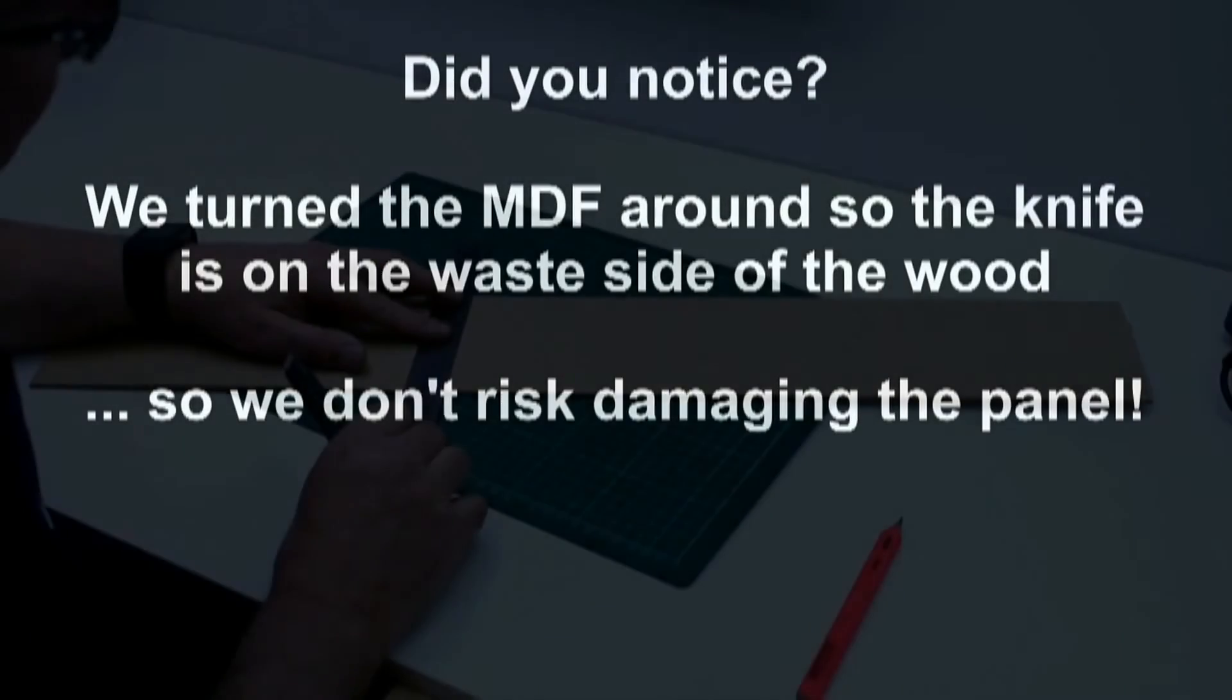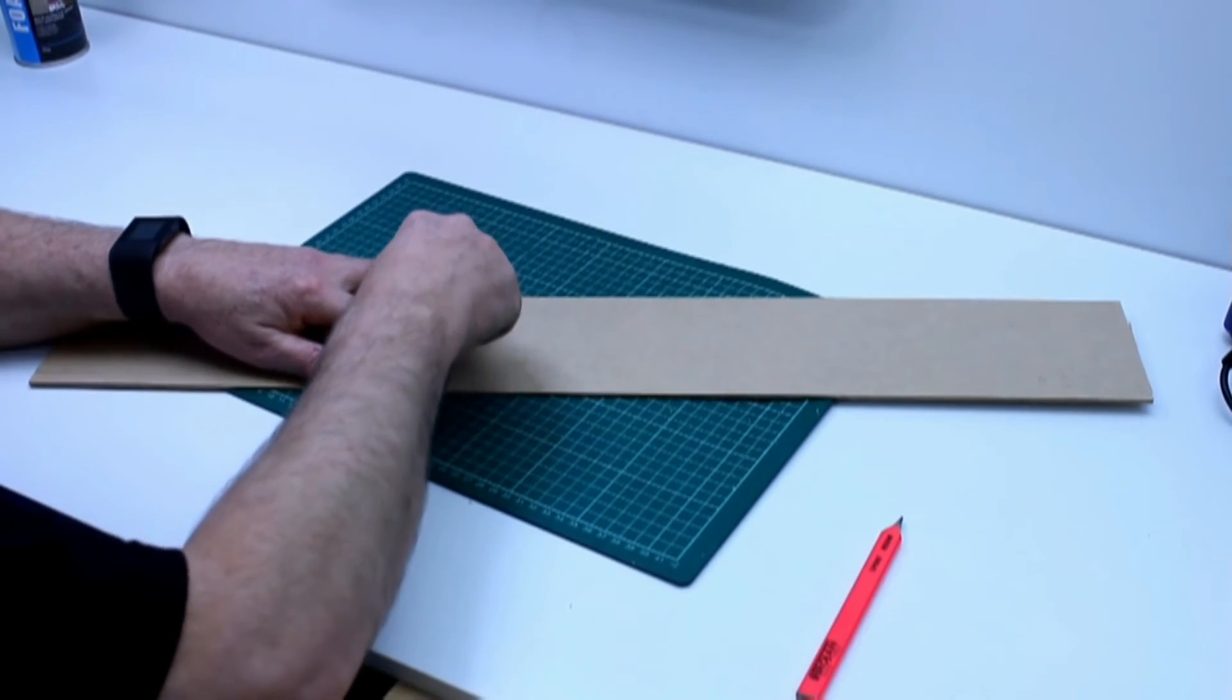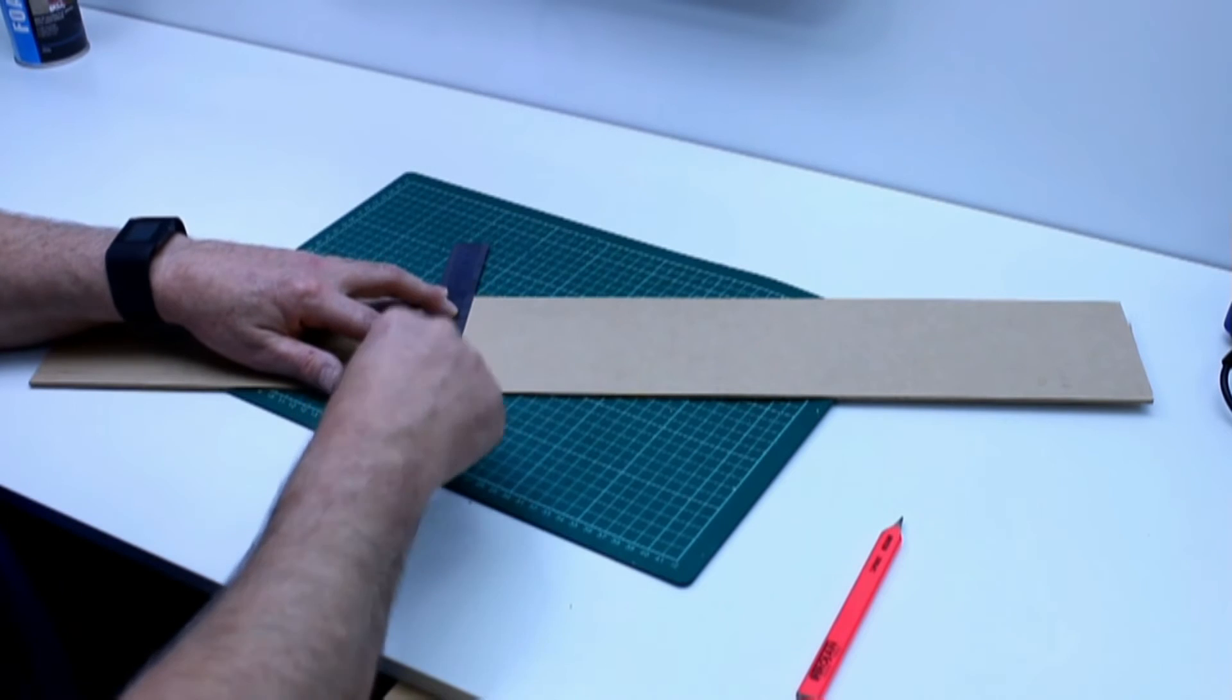Again, we position the ruler on the base so that the knife will be cutting away from the bit we want to keep.